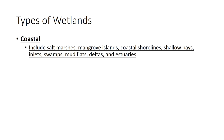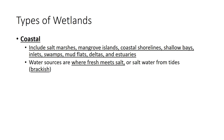We also have coastal wetlands, which include salt marshes, mangrove islands, coastal shorelines, shallow bays, inlets, swamps, mudflats, deltas, and estuaries. What's interesting about coastal wetlands is that's where freshwater meets saltwater. The organisms that live in our estuaries are even more interesting because they're adapted to both fresh and saltwater — it's not too many organisms that span both conditions.